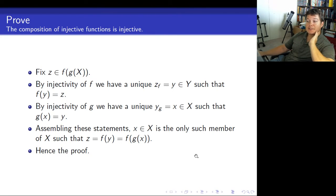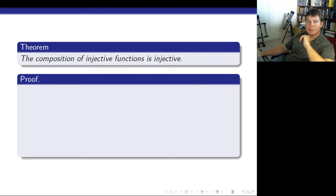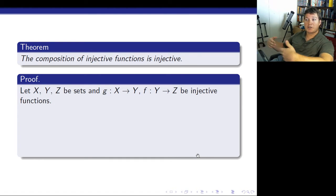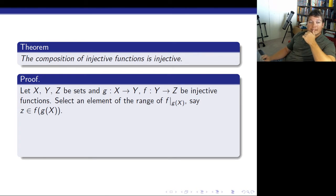All right, let's take a look at how we want to do this as a full, like, write-up proof. So, we're going to prove the composition of injective functions is injective. We're going to start by setting it up. So, let x, y, and z be sets. And g from x to y, f from y to z be injective functions.